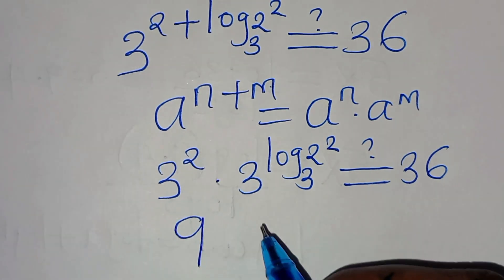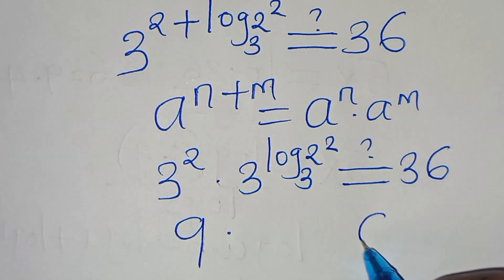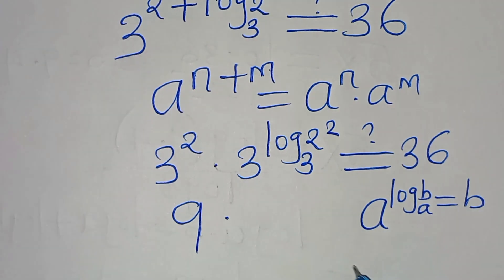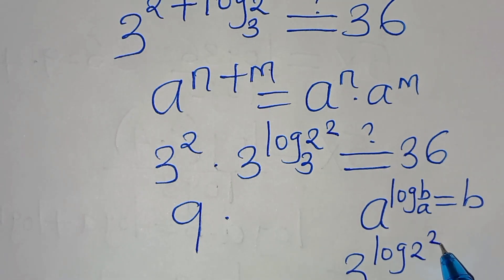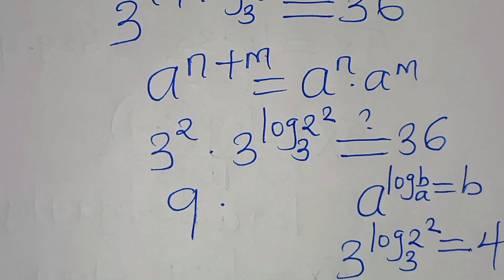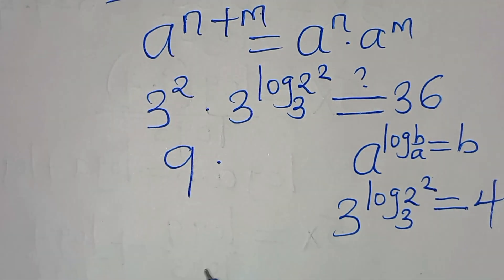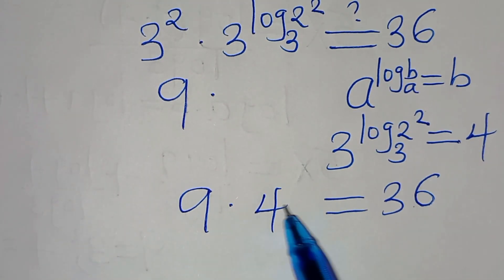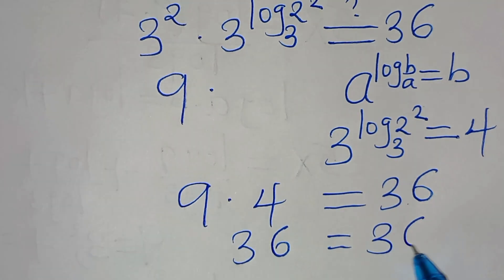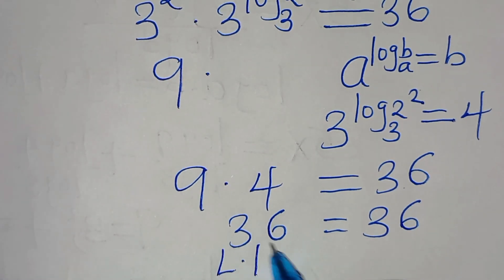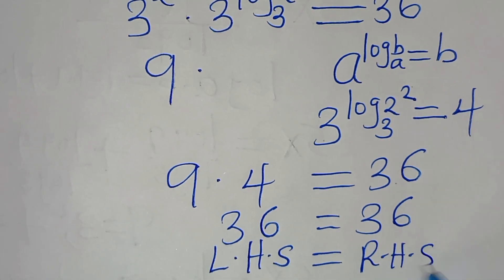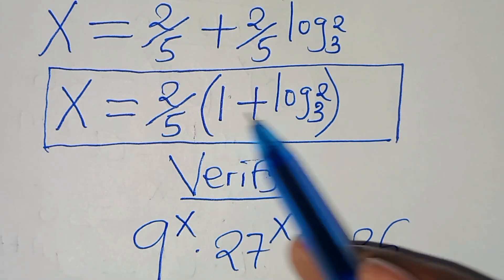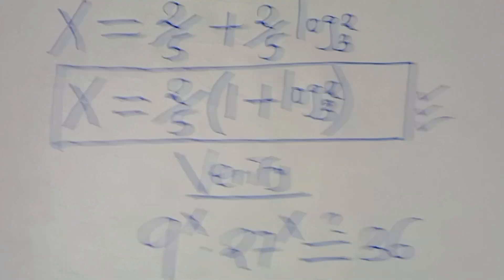So we have 9 times 3 to the power of log₃(2²). Applying the property a^(log_a b) = b, this gives us 3^(log₃4) = 4. Substituting back, we get 9 times 4, which equals 36 — matching the right-hand side. This confirms the left side equals the right side, and x equals (2/5)(1 + log₃2) satisfies the equation.